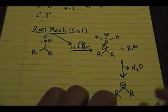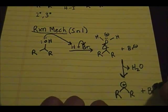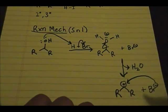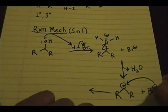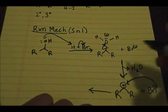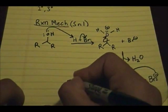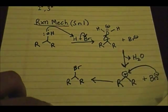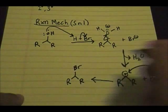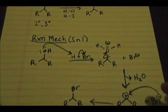You still have Br minus. Simply, the Br minus forms a bond with the carbon that has a positive charge — now everybody's happy. Bromine now has a full octet because it took the pair of electrons and shared them with that carbon. The result of that step is basically your secondary alkyl halide, and you have H2O as a byproduct. That's all there is to this reaction mechanism.